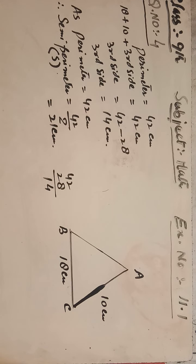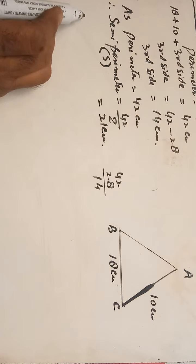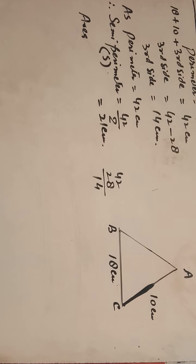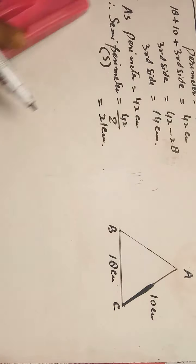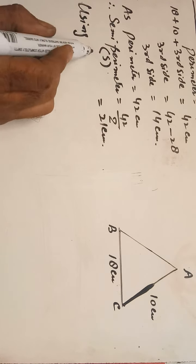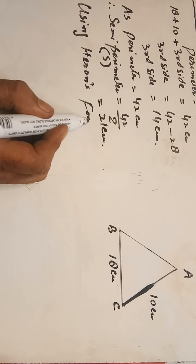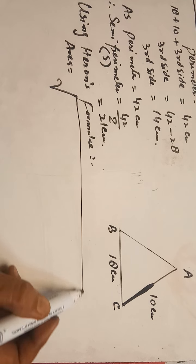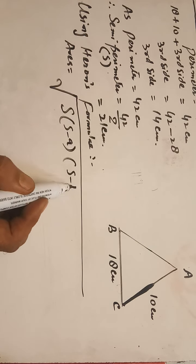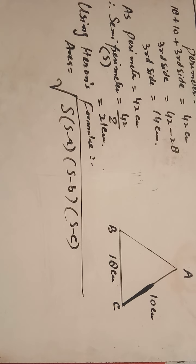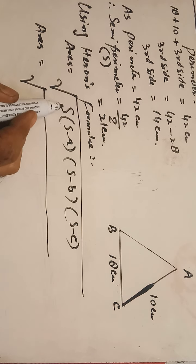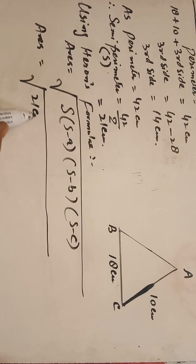Now using Heron's formula. The area equals the square root of s times (s minus a) times (s minus b) times (s minus c), where s is the semi-perimeter, which is 21 centimeters.